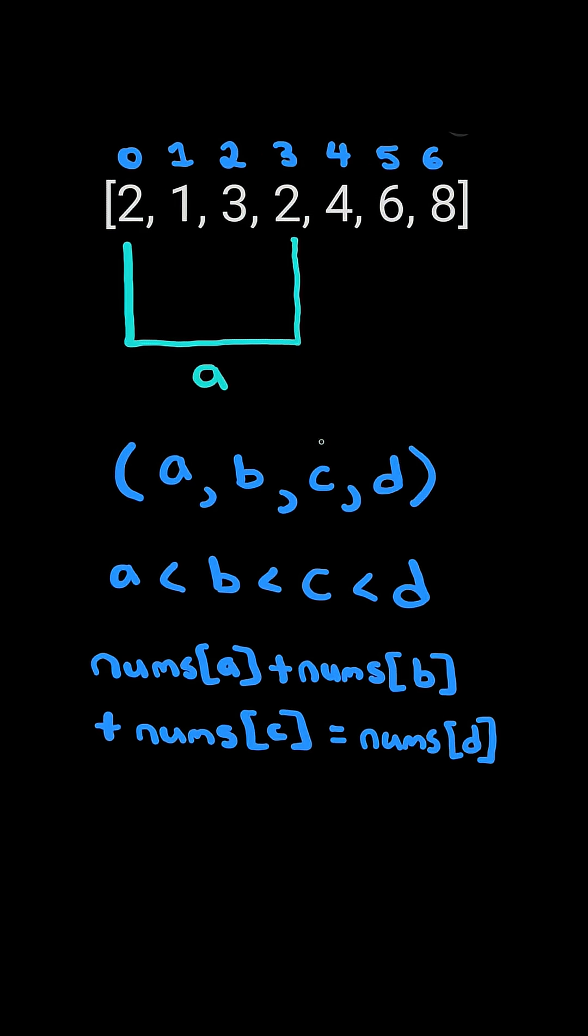The first loop will iterate from the beginning to n minus 3. The second loop, b, will iterate after a up to n minus 2.